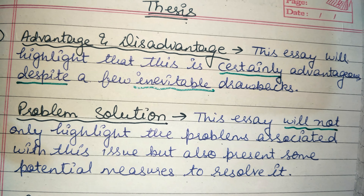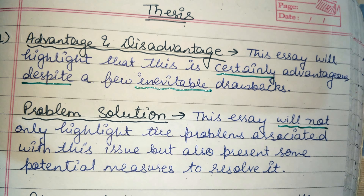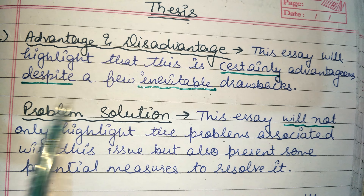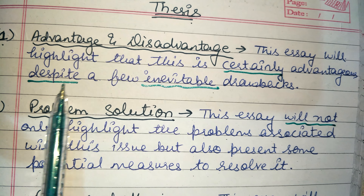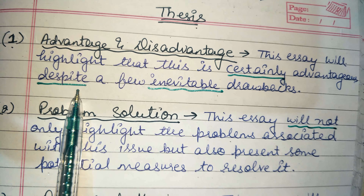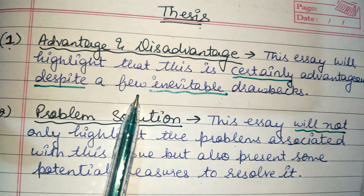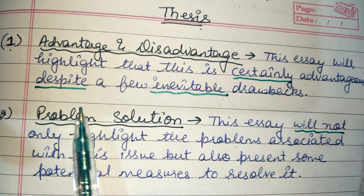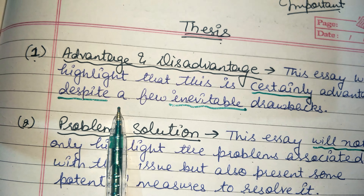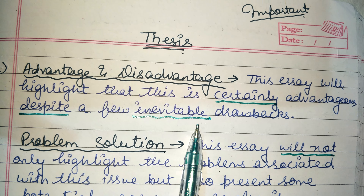We have to change our pattern to make it more complex by using complex words in the thesis line. The word 'despite' makes this thesis line high-level — seven plus. Another key word is 'inevitable.' Using these words can help you score a seven plus band.